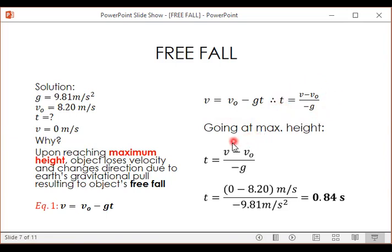And then for the solution, let's substitute our given. So we have final velocity at 0, initial velocity at 8.20, and then our gravitational acceleration is 9.81.